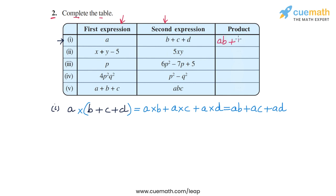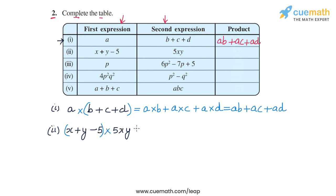So a b plus a c plus a d is the answer for part one. In part two we have to multiply x plus y minus five with five x y. The first expression is a trinomial and the second is a monomial, so we apply the distributive law and expand this as x into five x y, then y into five x y, and then minus five into five x y.